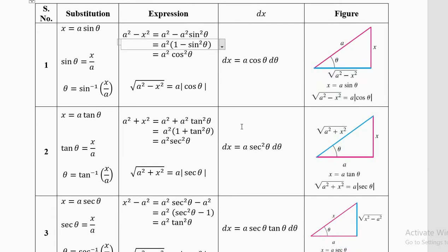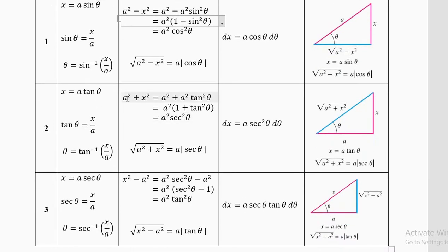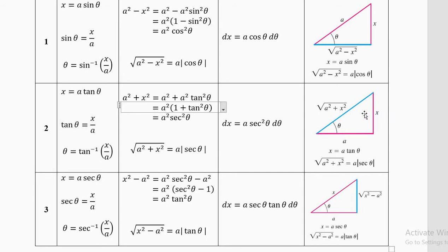The same simplification occurs with the other substitutions. For (a² + x²): put x = a tanθ, giving a² + a² tan²θ = a²(1 + tan²θ) = a² sec²θ — two things become one. From the triangle, tanθ = x/a and the hypotenuse (opposite the right angle) is √(a² + x²).